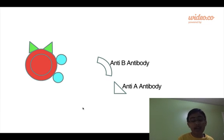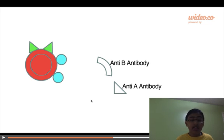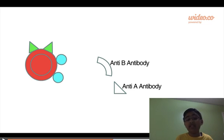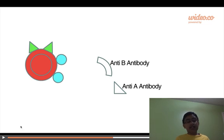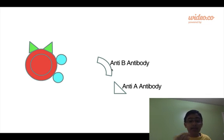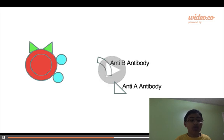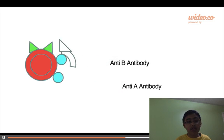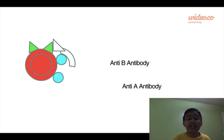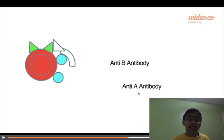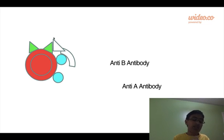Since AB has no antibodies, anyone can give to AB. This animation describes what would happen if it had anti-B or anti-A antibodies, which won't happen. The anti-B antibodies would hook on, and the anti-A would also hook on, creating an immune reaction, therefore stopping your blood flow and most probably killing you.